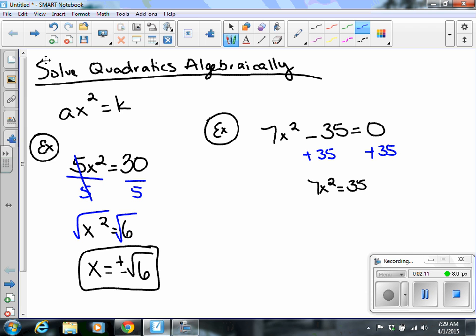So now it's similar to the problem on the left. I'm going to divide by 7. So I'm left with x squared equals 5. I'm going to take the square root. And x equals plus or minus the square root of 5.